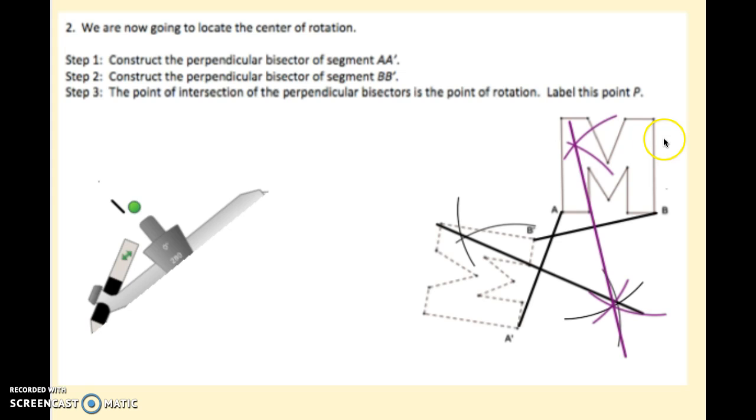So there's that same construction on the segment B, B prime. These I did in purple so it'd be a little easier to tell them apart. The point of intersection of those bisectors is the center of rotation. So I'm going to highlight that. That's going to be right where those two lines cross, which is right here. And we would label that point P. So that point of intersection would be point P.